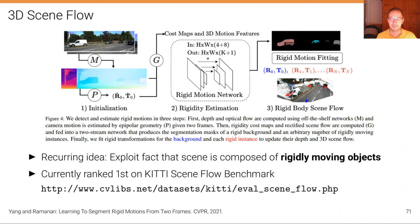of a rigid background and arbitrary number of rigidly moving instances. So it's decomposing the scene into its individual rigidly moving components. And once you have that, then you can fit rigid transformations for the background component and all rigidly moving instances.